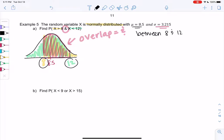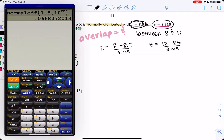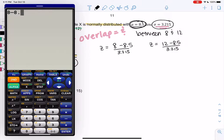So we needed the curve to see that. So let's go ahead and find z-scores. So we'll find a z-score for 8. We'll do 8 minus the mean of 8.5 divided by standard deviation. And then we'll do the same thing for 12, minus 8.5 divided by standard deviation of 3.215.